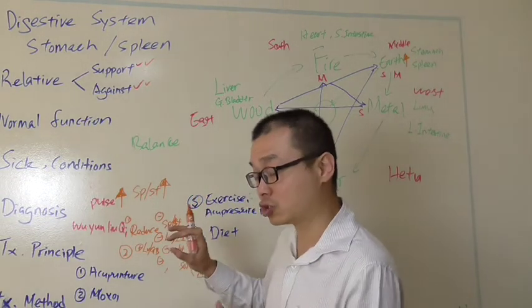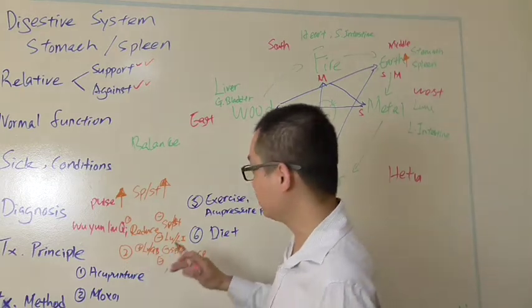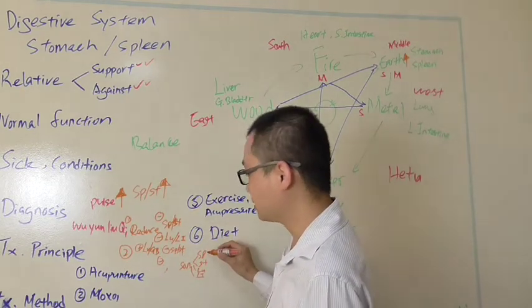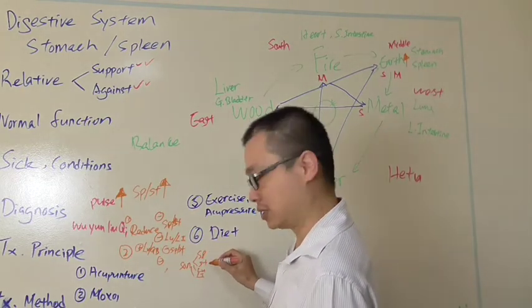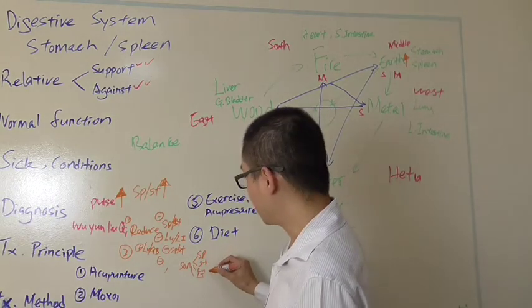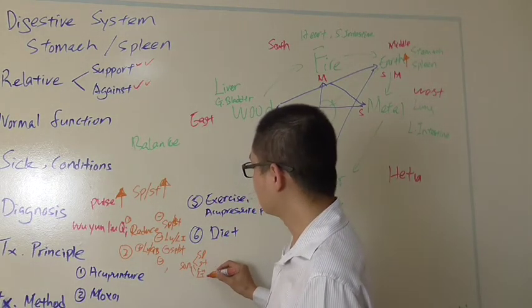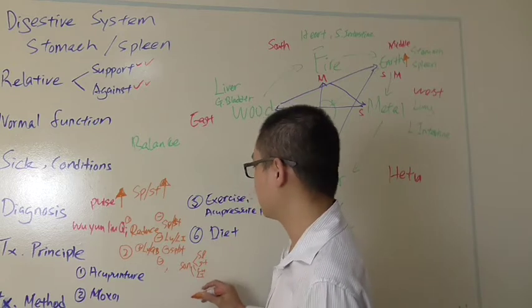I don't know the English code, but I know the Chinese one. So with spleen, shang qiu. Stomach, li dui. Lung, shi zhe. Large intestine, er jian.